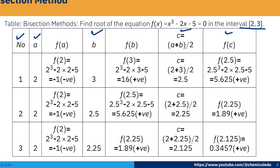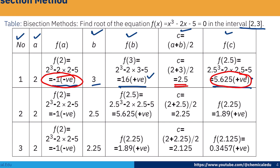For iteration 1: a = 2, f(a) is negative; b = 3, f(b) = 16, which is positive. The midpoint c = (2 + 3) / 2 = 2.5, and f(c) is positive. Since f(c) is positive and f(a) is negative, the root lies between 2 and 2.5. So b becomes c = 2.5.